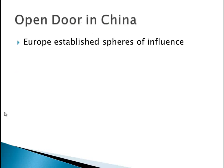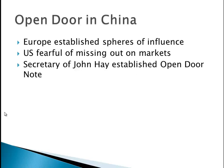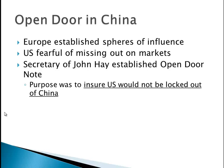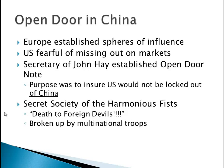Let's talk about China. If you recall spheres of influence from world history, different countries established spheres of influence in China with exclusive trading rights. The U.S. was afraid they'd miss out on markets, so Secretary of State John Hay established the Open Door Note. The purpose was to ensure the U.S. would not be locked out of China — essentially saying everybody should be allowed to trade in China any way they want. Then we have the secret society of the Harmonious Fists, more commonly known as the Boxers. They led a rebellion — death to foreign devils — and it was broken up by multinational forces.